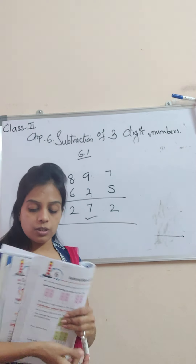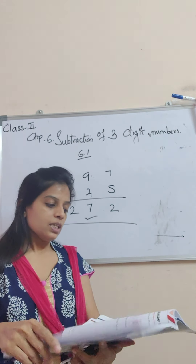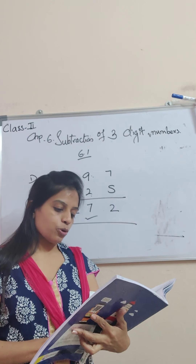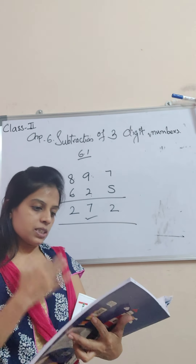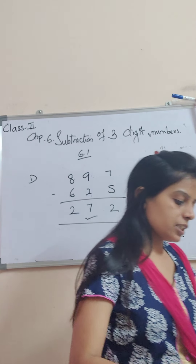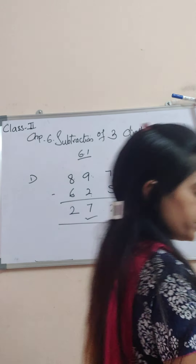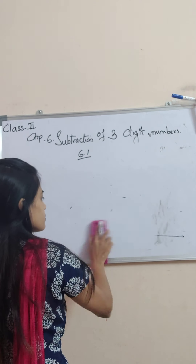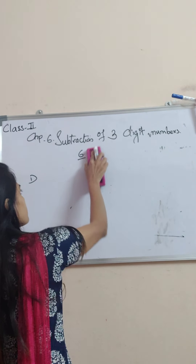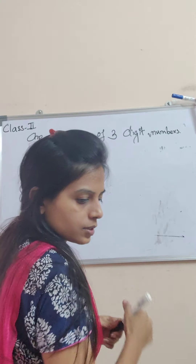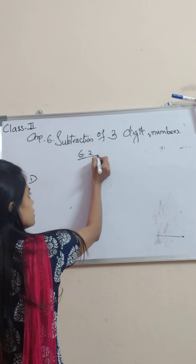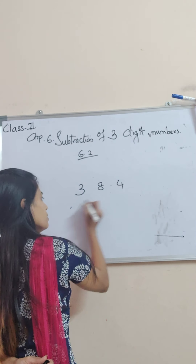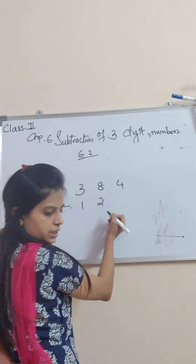Now, children, we shall learn about borrowing. Till now, you have learned about borrowing from ten's place. Now, we are going to learn borrowing from hundreds place. Exercise 6.2 — I'm going to show you one sum. The sum is 384 minus 127.